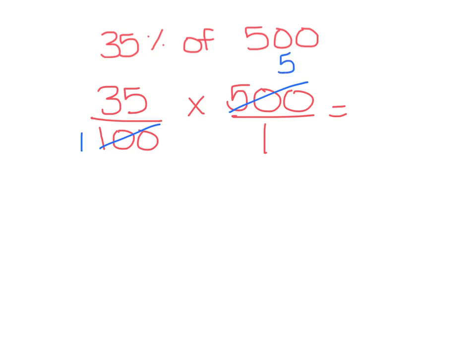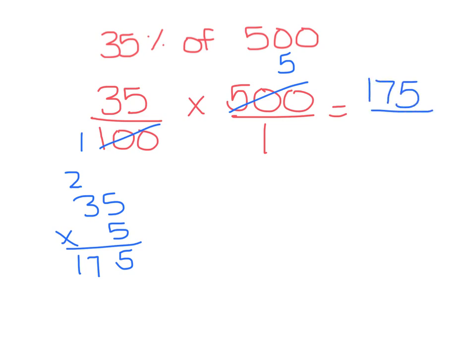Since we can't cross simplify any further, we're going to multiply right across. We do 35 times 5. 5 times 5 is 25, 5 times 3 is 15 plus 2 is 17 — so we end up with a numerator of 175. Then 1 times 1 is 1, which equals 175. So 35% of 500 is 175.